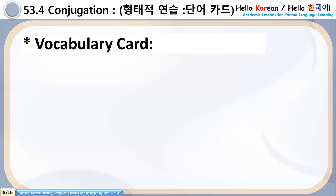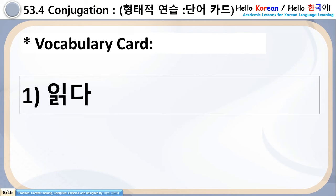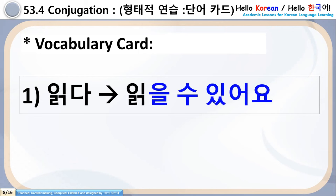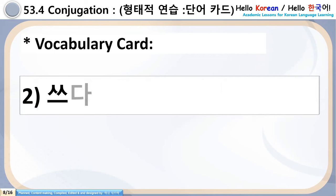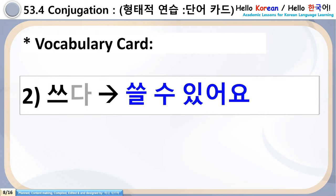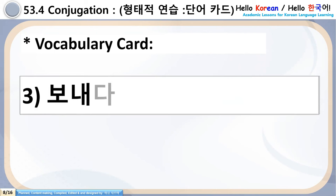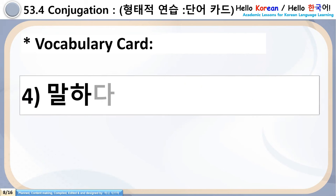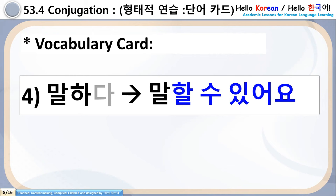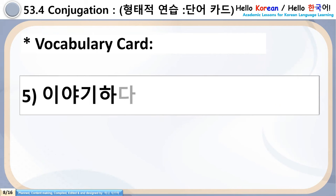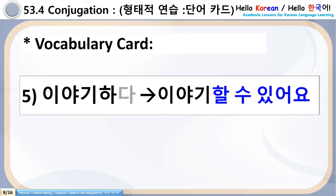Now it's time to do some practice. Words will appear on the screen and you have to add Ulsu Issa Ayo. Number 1: Ikta → Ulsu Issa Ayo. Number 2: Suda → Silsu Issa Ayo. Number 3: Phonedha → Phonelsu Issa Ayo. Number 4: Mar Hada → Mar Halsu Issa Ayo. Number 5: Iyagi Hada → Iyagi Halsu Issa Ayo. Now the conjugation steps are clear.